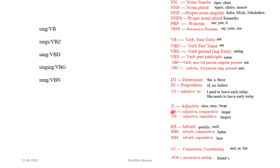JJ is for adjective — for example, nice, nice girl, easy problem. JJR is comparative adjective — for example, larger. JJS is superlative — for example, largest. RB is for adverb — for example, quickly. RBR is comparative adverb and RBS is superlative adverb. CC can be used for conjunctions: and, or, but. POS is used for possessive entry.